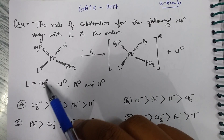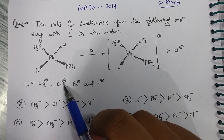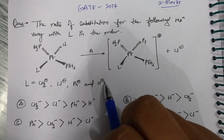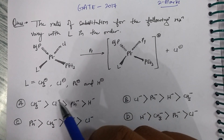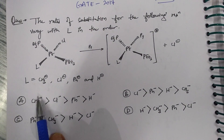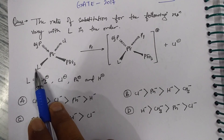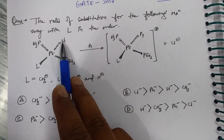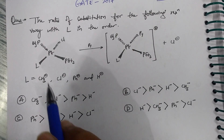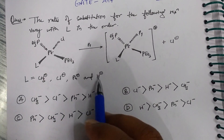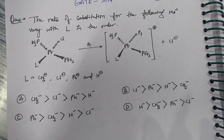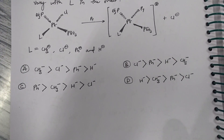In this question, L can be the methyl ligand (CH₃⁻), chlorine (Cl⁻), phenyl, or H⁻. We have to find out which of these four ligands in place of L will most help in the substitution of chlorine by pyridine — in other words, which has the greater trans effect. I am giving you the trans effect series.